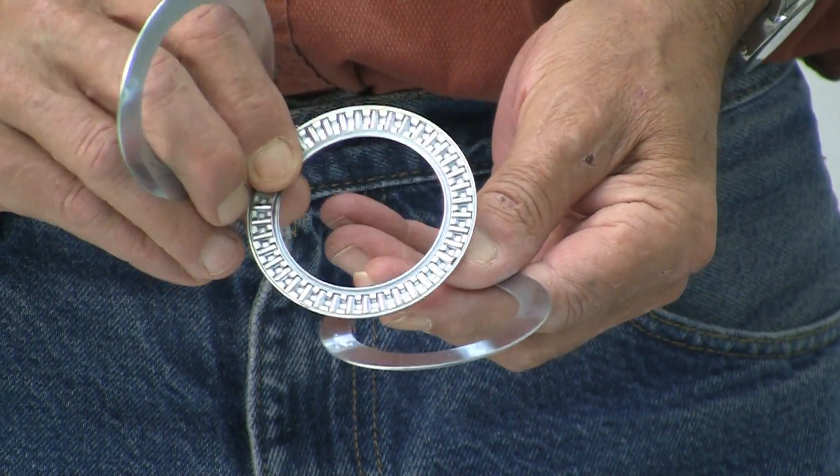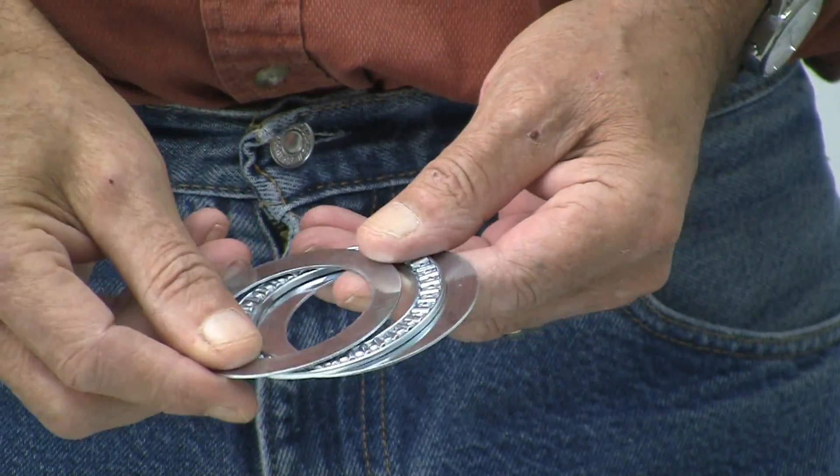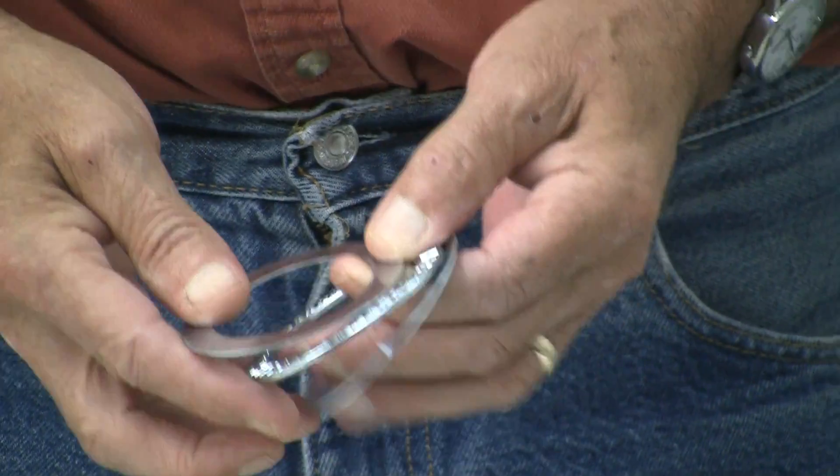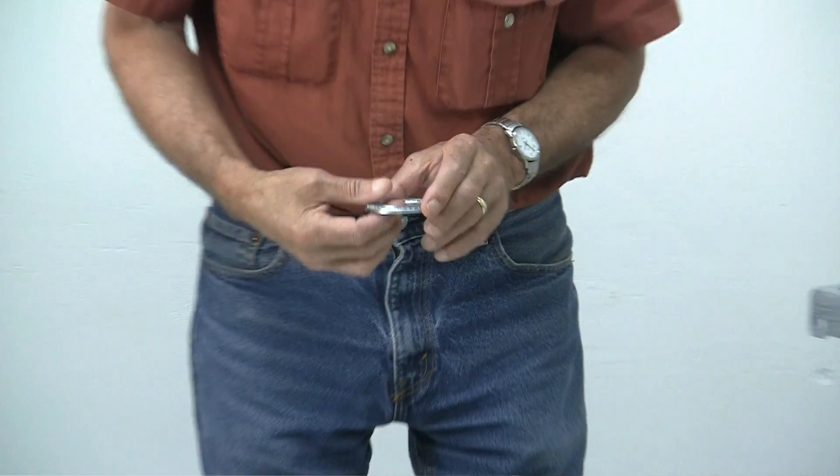It consists of just a thrust bearing and two washers. I'll show you how it works.